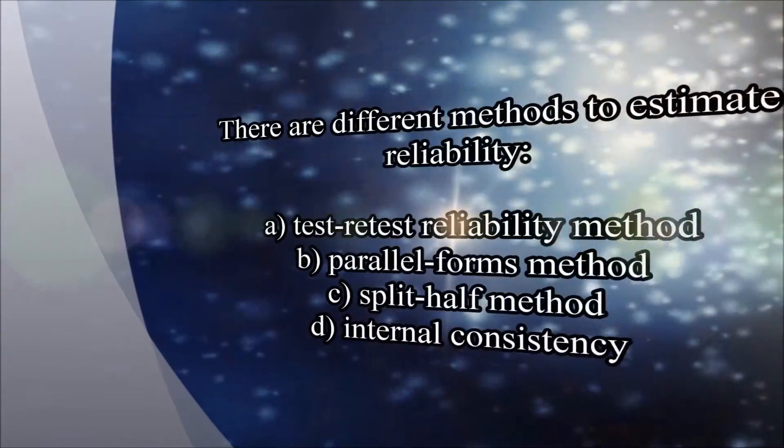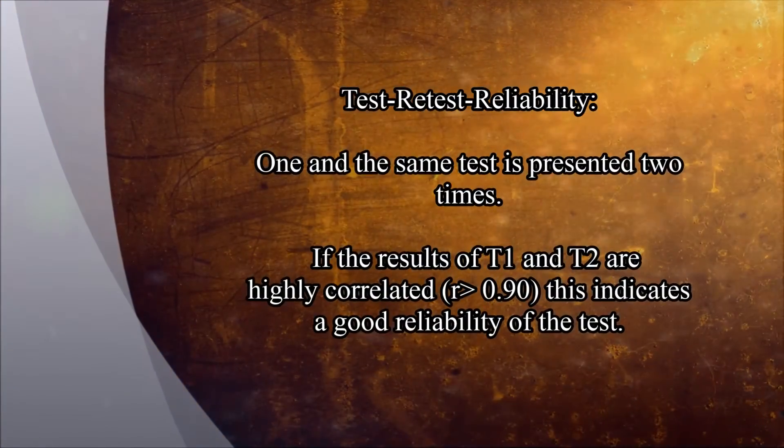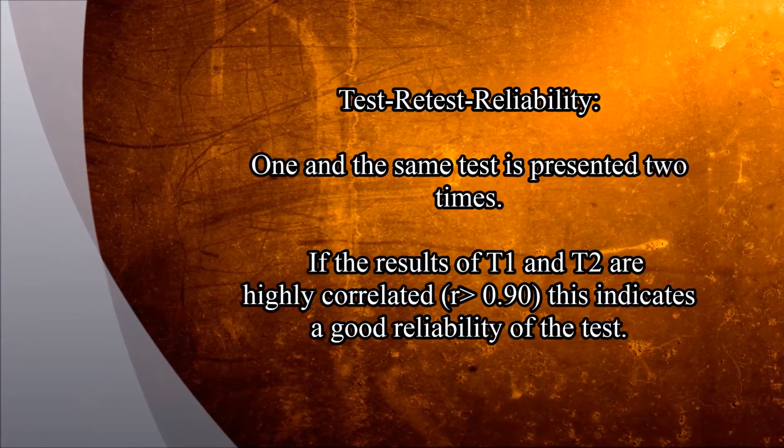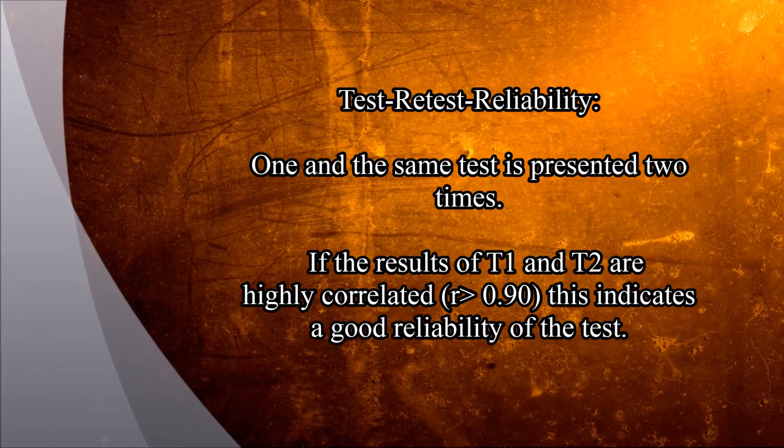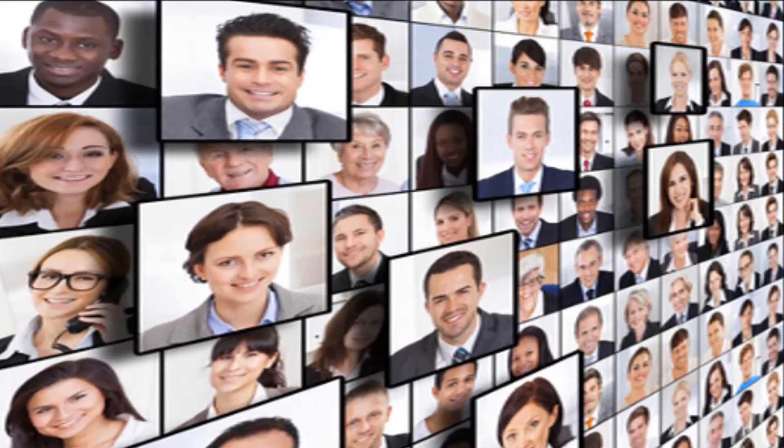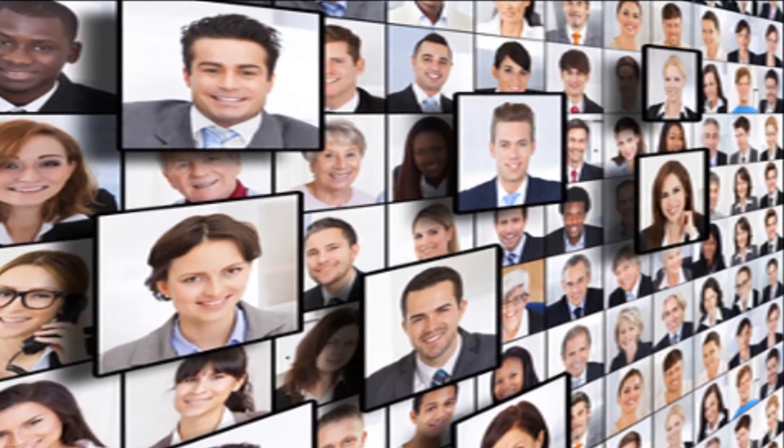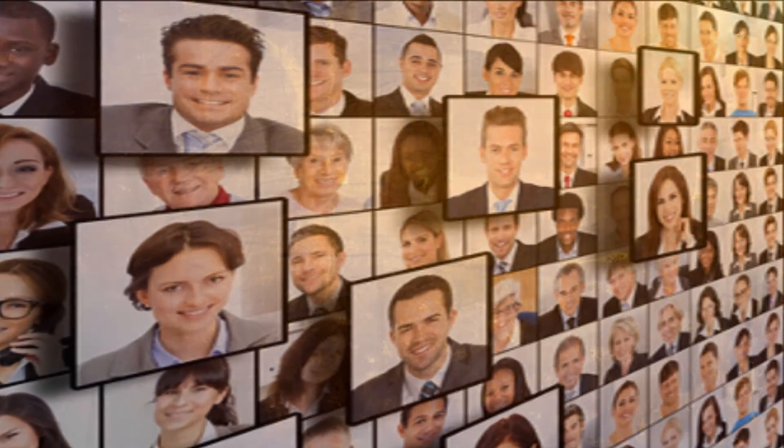Like I said in the beginning, there are different methods to estimate reliability. One very common method is the so-called retest reliability. All you do is present one and the same test for two times. So you have maybe 300 participants who took an intelligence test and maybe four weeks later they have to take one and the same test again. And then you just take a look. Well, those guys who scored at test time one very high are those the ones who scored very high at test point two as well.